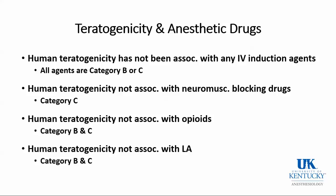Regarding specific drugs: there have been no reports of an association between any IV induction agent and teratogenicity in humans. All IV induction agents are categorized as either pregnancy category B or C. Similarly, neuromuscular blocking drugs and opioids have no association found with human teratogenicity and fall into category B or C. Regional anesthesia with local anesthetics also has a long history of safety and falls within category B or C.